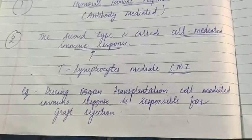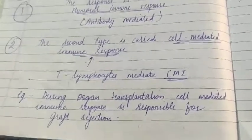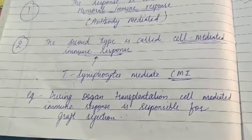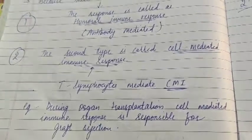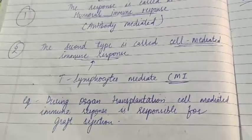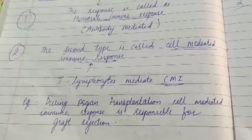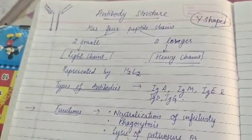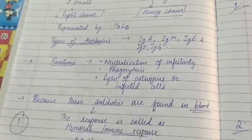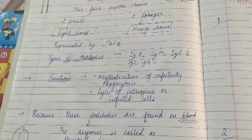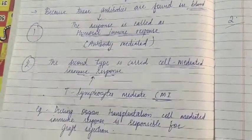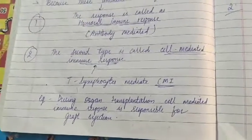So today we have studied that there are two types of immunity: innate immunity, which is present by birth, and acquired immunity, which we develop during our lifetime through encounters with antigens. We also studied the structure and functions of antibodies, and on the basis of antibodies, our body has two types of response: humoral immune response and cell-mediated immune response. This was all about immunity, and we will discuss this further in the next lecture.